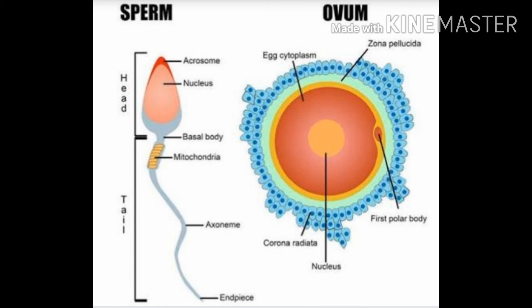Gametes are sex cells. They are produced by gonads. Gonads are organs or sex organs that produce gametes, the sex cells. Sperms are male sex cells and eggs are female sex cells, as you can see in the diagram shown on screen. During reproduction, a sperm and an egg cell fuse together to form a zygote. This is the first cell and every human being is formed from this zygote. This process is called fertilization, and then this zygote develops into an offspring.